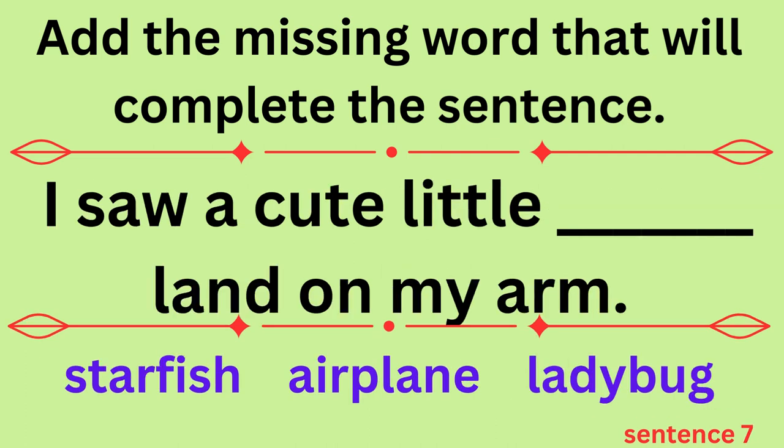Sentence seven: I saw a cute little blank land on my arm. Would the answer be starfish, airplane, or ladybug?